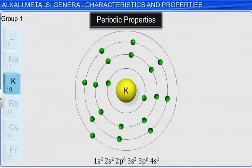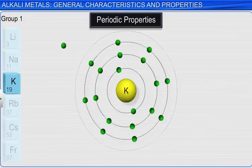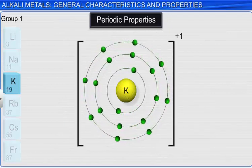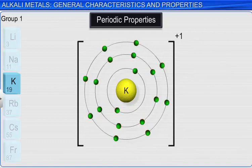The cations that form are in all cases smaller than the parent atom. Since there are fewer electrons, there are fewer electron-electron repulsions, and so the radius is smaller for the cation. For essentially the same reasons as we discussed with atomic radius, the cation radii for the group 1 metals increase from the top to the bottom of the group.